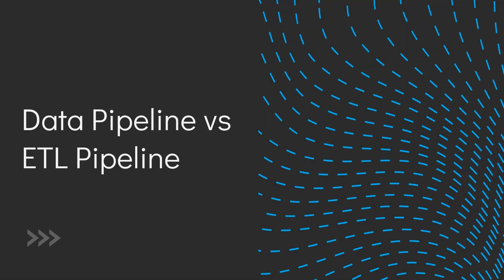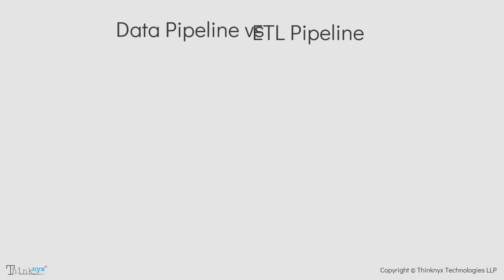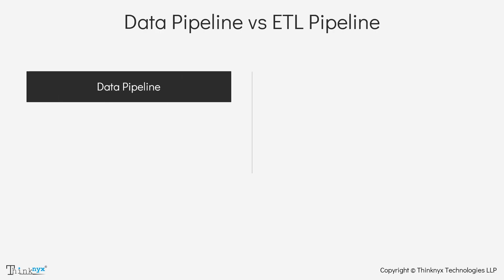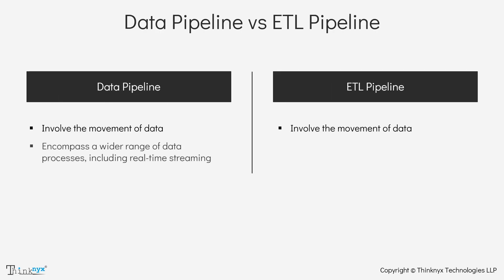But how do data pipelines and ETL pipelines differ? While both involve the movement of data, a data pipeline can encompass a wide range of data processes including real-time streaming. On the other hand, ETL is more focused on batch processing and data preparation for analysis.